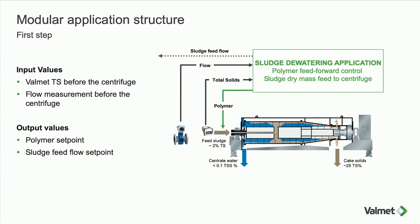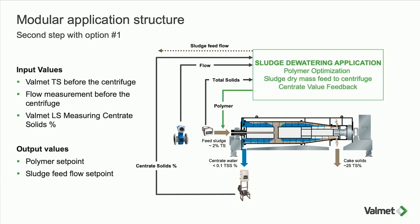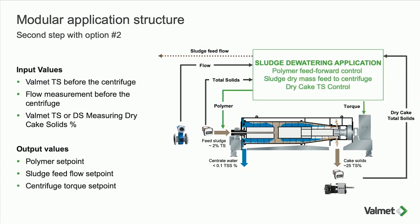The next step could be adding Valmet LS, so we're measuring centrate as well. In addition to controlling mass flow, we use the actual centrate value to give feedback for the polymer control — we can see what the polymer is doing to the centrate, and this is all handled automatically. Alternatively, if we have a dry cake measurement instead, we can also manipulate the torque value automatically to optimize the dry cake at the end of the centrifuge.